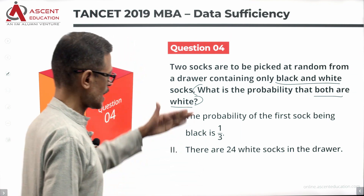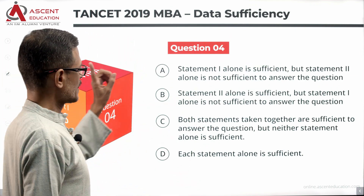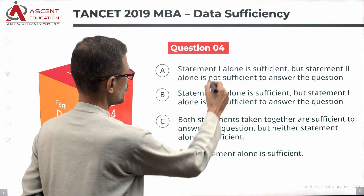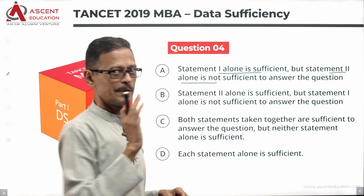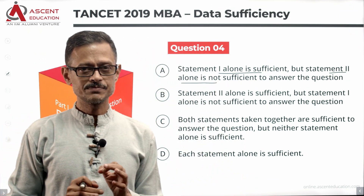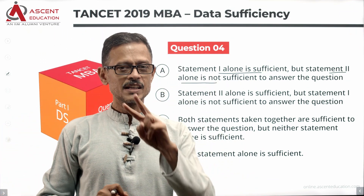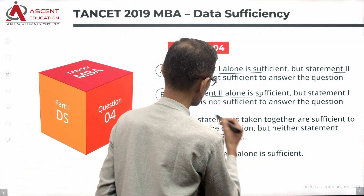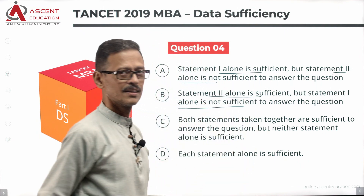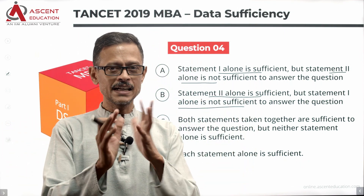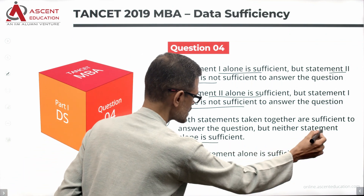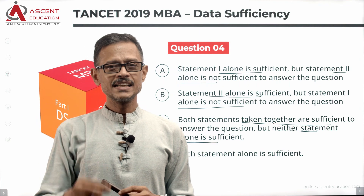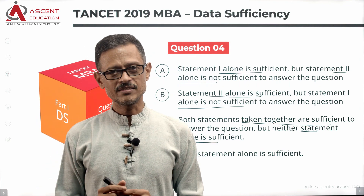Let's look at the four answer options. Answer option A: if statement one alone is sufficient and statement two is not sufficient, the answer is A. Answer option B: if statement two alone is sufficient and statement one is not, that's answer option B. Answer option C: if the statements are independently not sufficient, but when taken together the information is sufficient to answer the question, that's answer option C.